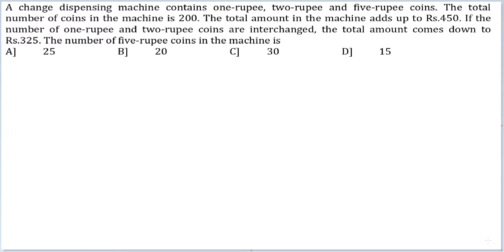Let's look at this question. A change dispensing machine contains 1 rupee, 2 rupee and 5 rupee coins. The total number of coins in the machine is 200. The total amount in the machine adds up to rupees 450.